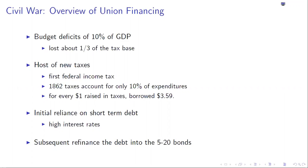Given these enormous financing needs, the Treasury is going to need to look beyond a small group of wealthy financiers and bankers for credit. The government and the Treasury, for the first time, will market its debt to everyday working-class Americans. In the process, this is going to help create a nation of investors.